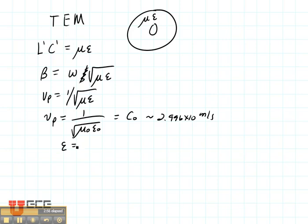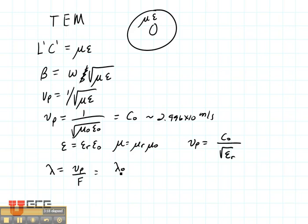Remember that in general, epsilon is epsilon-r epsilon-naught, and that mu is mu-r mu-naught. That gives us the velocity of propagation is the speed of light divided by the square root of epsilon-r for a lossless TEM transmission line. The wavelength is the velocity of propagation divided by the frequency, which ends up being the wavelength in air divided by the square root of epsilon-r.